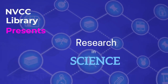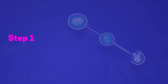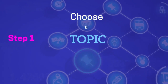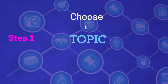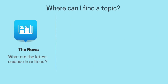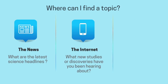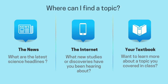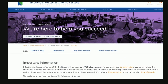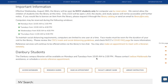Step one: choose your topic. Where can you get ideas for a topic? Consider these places: the news — what science headlines have you seen? The internet — have you heard of any new discoveries or studies? Or your textbook — is there a topic you want to learn more about? A library tip: sign up for a free New York Times account so you can monitor science headlines on your own.